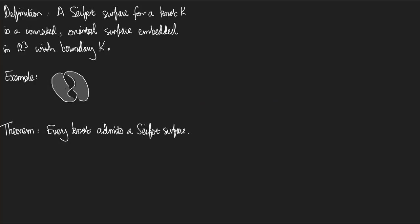Here is the definition. A Seifert surface for a knot K is a connected, orientable surface embedded in R3 with boundary K. So, a Seifert surface is a surface inside R3 whose boundary is our knot K.